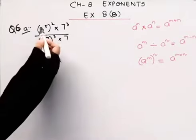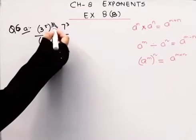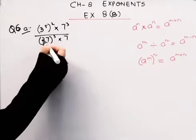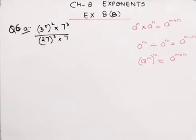So the first one is, 3 raised to the power 5, this whole raised to the power 2, times 7 cube, divided by 27 raised to the power 3 times 7. How do we simplify this?